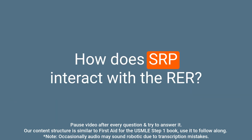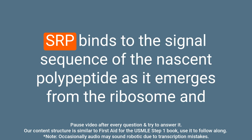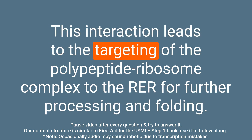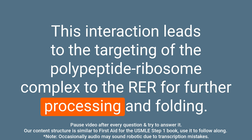Question: How does SRP interact with the RER? Answer: SRP binds to the signal sequence of the nascent polypeptide as it emerges from the ribosome and then interacts with the RER through a receptor protein called the SRP receptor. This interaction leads to the targeting of the polypeptide ribosome complex to the RER for further processing and folding.